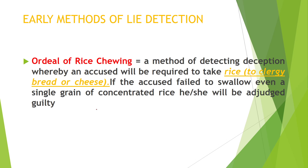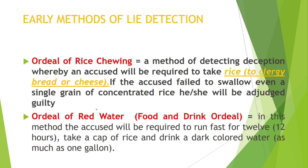The rice chewing ordeal is a method of detecting deception whereby the accused is required to take rice — similar to the clergy's bread in Catholicism. If the accused failed to swallow even a single grain of concentrated rice, he or she would be judged guilty. The belief was that the body suspected of being possessed by a demon would be unable to swallow it.